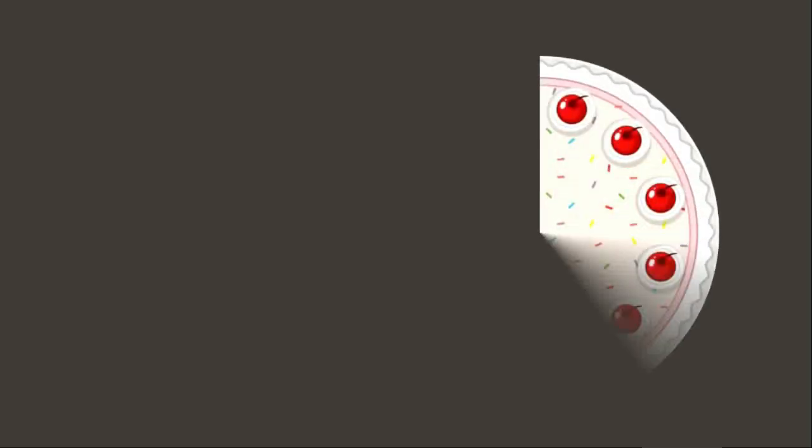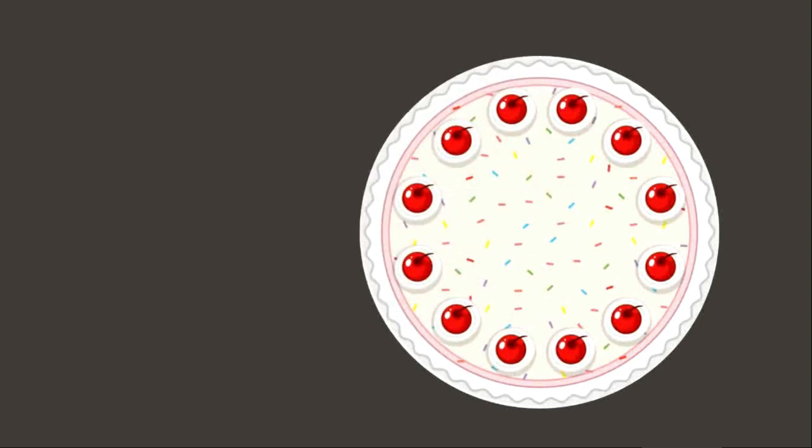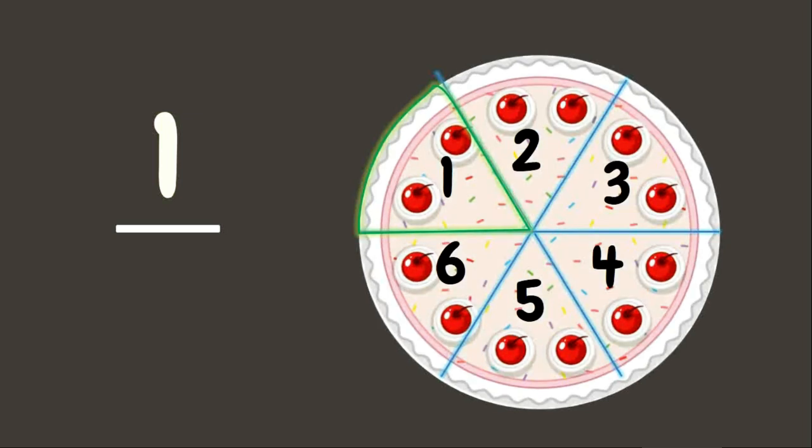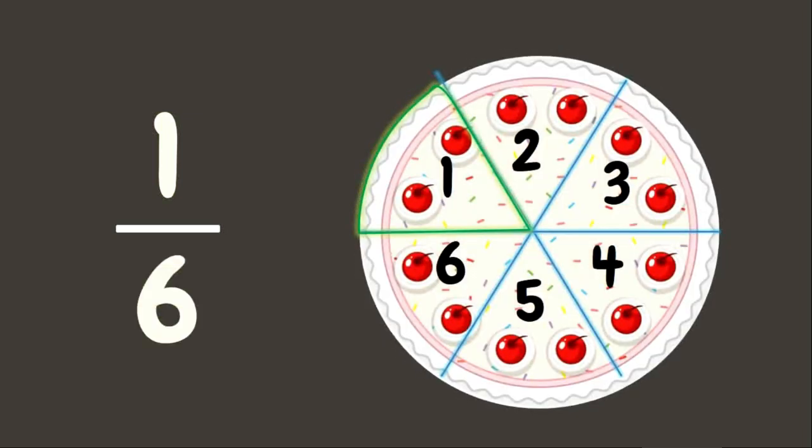Let's have another example. It's your birthday today. This is one whole round cake. You divided it among your 6 siblings. You took one slice of cake. In fraction, it's 1 over 6 or 1 sixth.